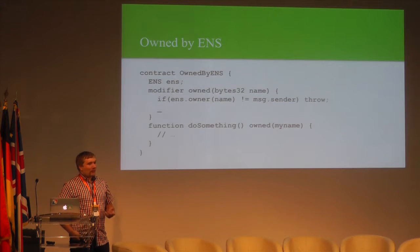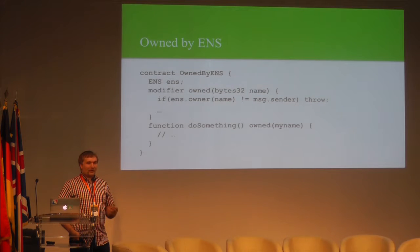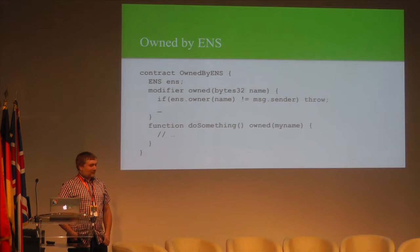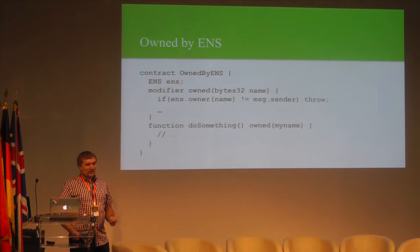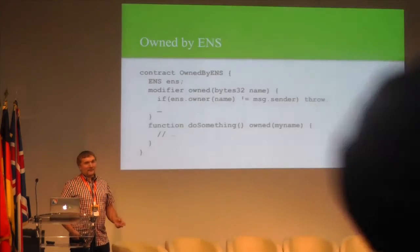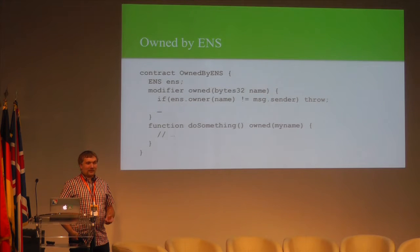Here's a simple example of what you can already do with ENS. You may be familiar with the owned pattern, where a contract has an owner who can execute certain privileged operations. Here we show how you can accomplish the owned pattern using only ENS. We've defined a modifier called 'owned' that checks if the caller is the same person who owns a particular record in ENS, permitting the operation if so or throwing if not. With this, you can have multiple contracts referencing the same name and transfer ownership of all of them simply by updating that one record.